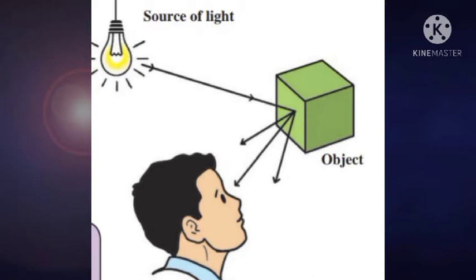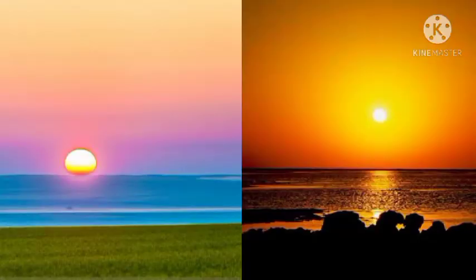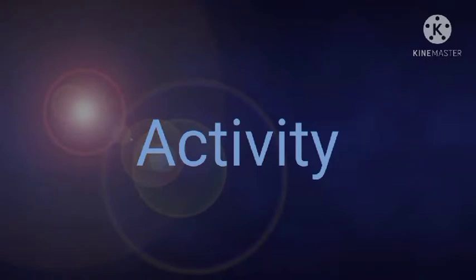Today's topic is the scattering of light, the most important part of the properties of light. During sunrise and sunset, did you see the different colors in the sky? The sky becomes yellowish, reddish, greenish — different colors. Why do we see these different colors in the sky? Let's perform an activity to find out.